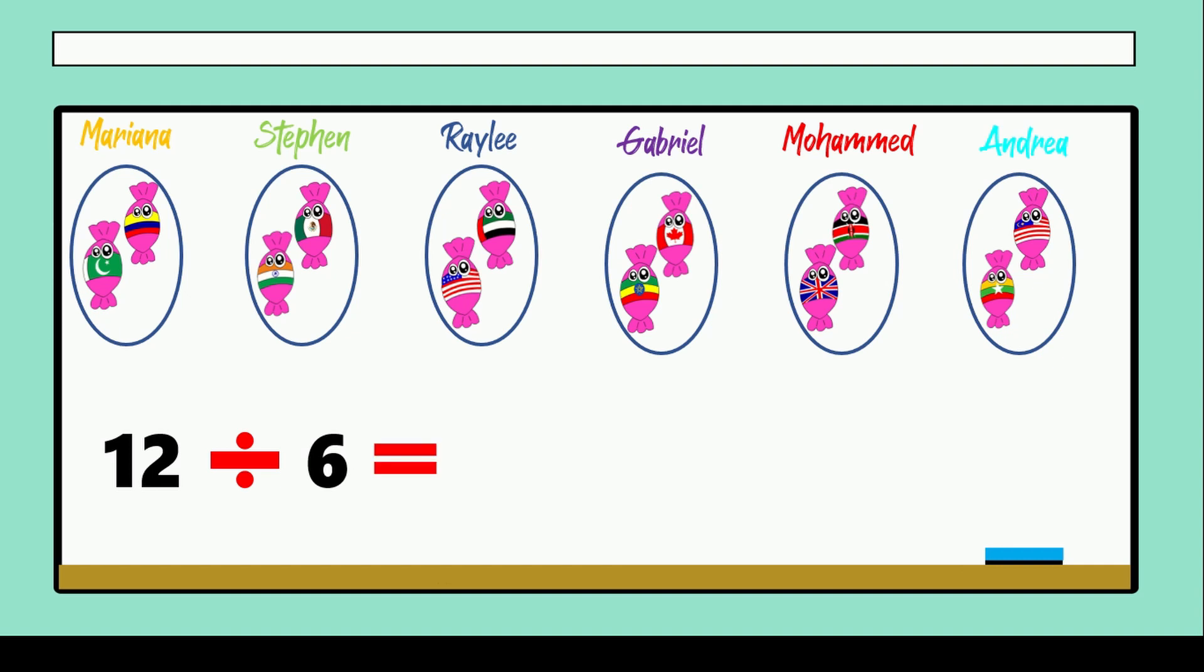The answer is the amount of candies that each student will get. So in this case it's two. So what is the answer? Remember that for each word problem we will get an answer. Each student will get two candies.